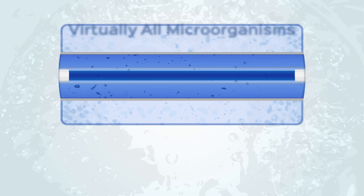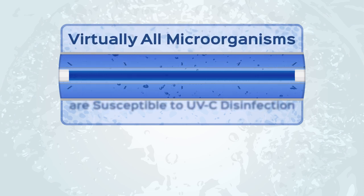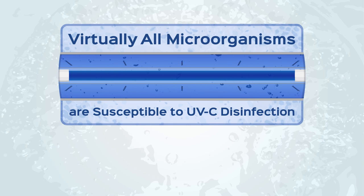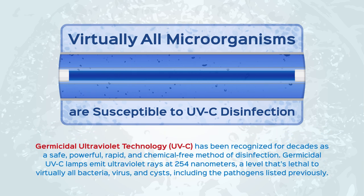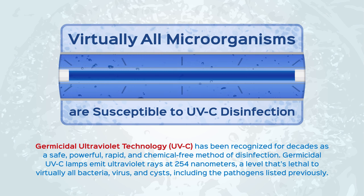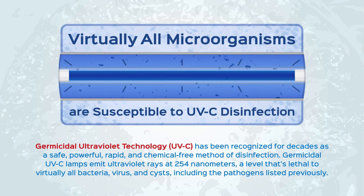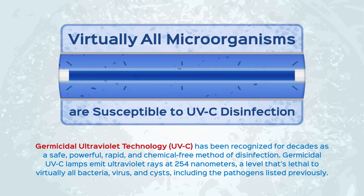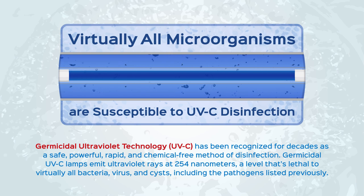Did you know that virtually all microorganisms are susceptible to UVC disinfection? Germicidal ultraviolet technology, or UVC, has been recognized for decades as a safe, powerful, rapid, and chemical free method of disinfection. Germicidal UVC lamps emit ultraviolet rays at 254 nanometers, a level that's lethal to virtually all bacteria, viruses, and cysts, including the pathogens listed previously.